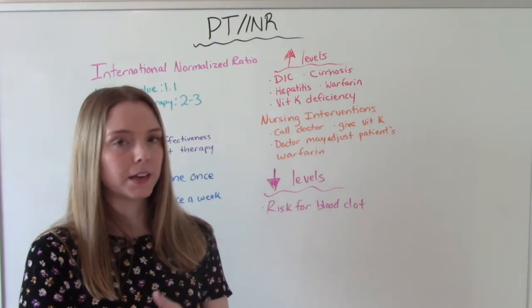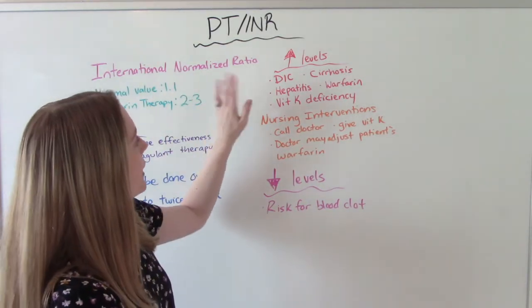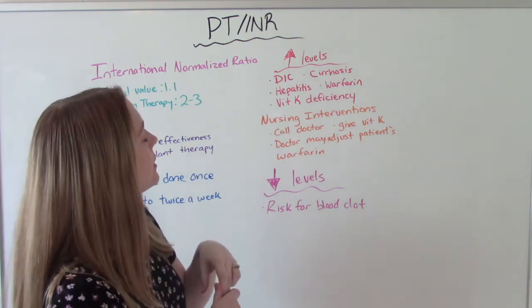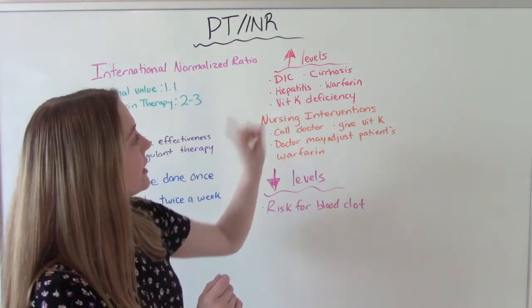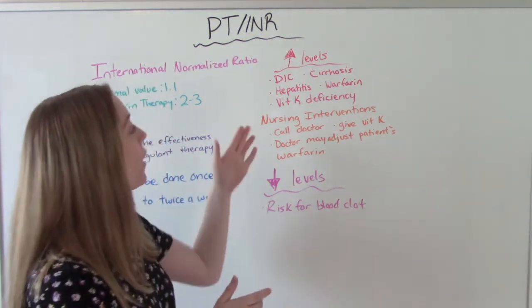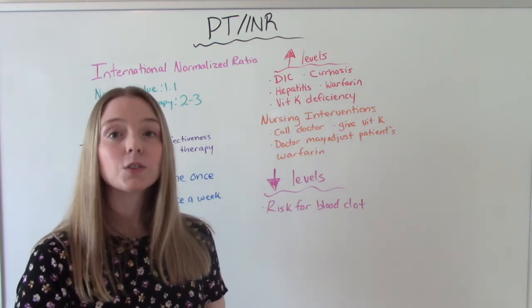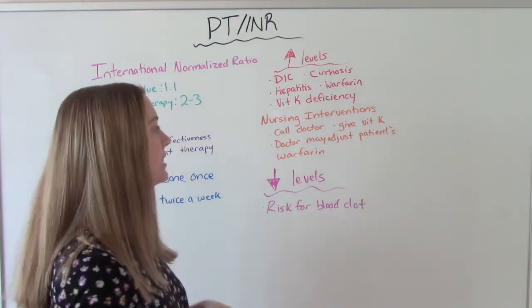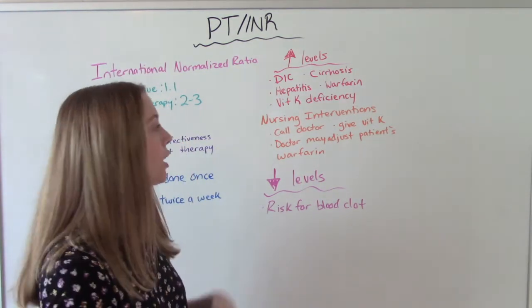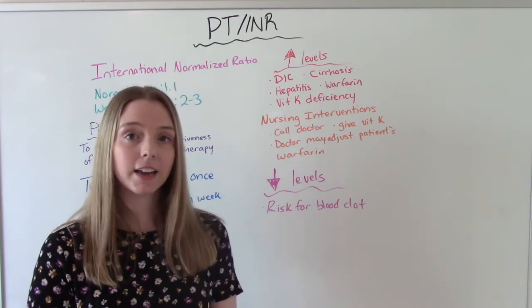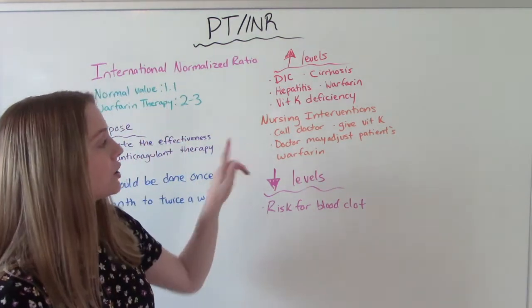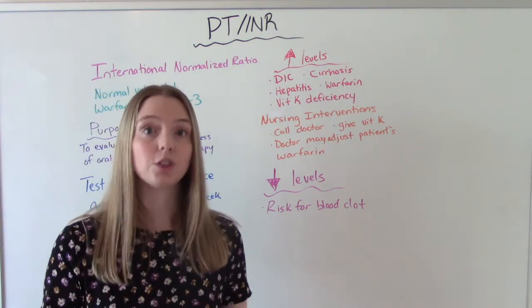What could altered levels mean? If somebody has an increased level — so it's taking longer than normal — this could be because of DIC, cirrhosis, hepatitis, the medication itself, or they could have a vitamin K deficiency. If any of these are the case, you're going to call the doctor with the abnormal result. They may ask you to give a vitamin K injection, because remember vitamin K is a clotting factor, and the doctor will probably use this information to adjust the patient's dose.